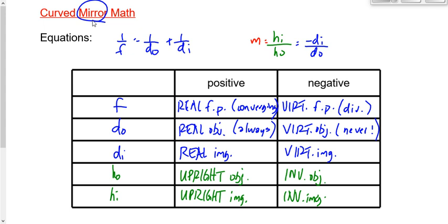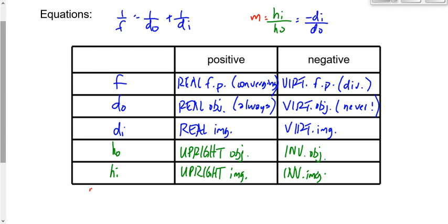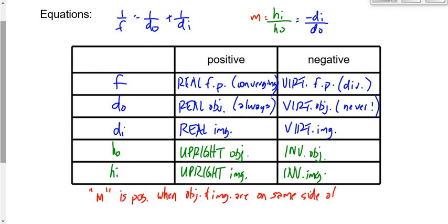M is positive when the object and image are on the same side of the principal axis — in other words, if they're both upright or both inverted. M is negative if one is upright and the other is inverted.